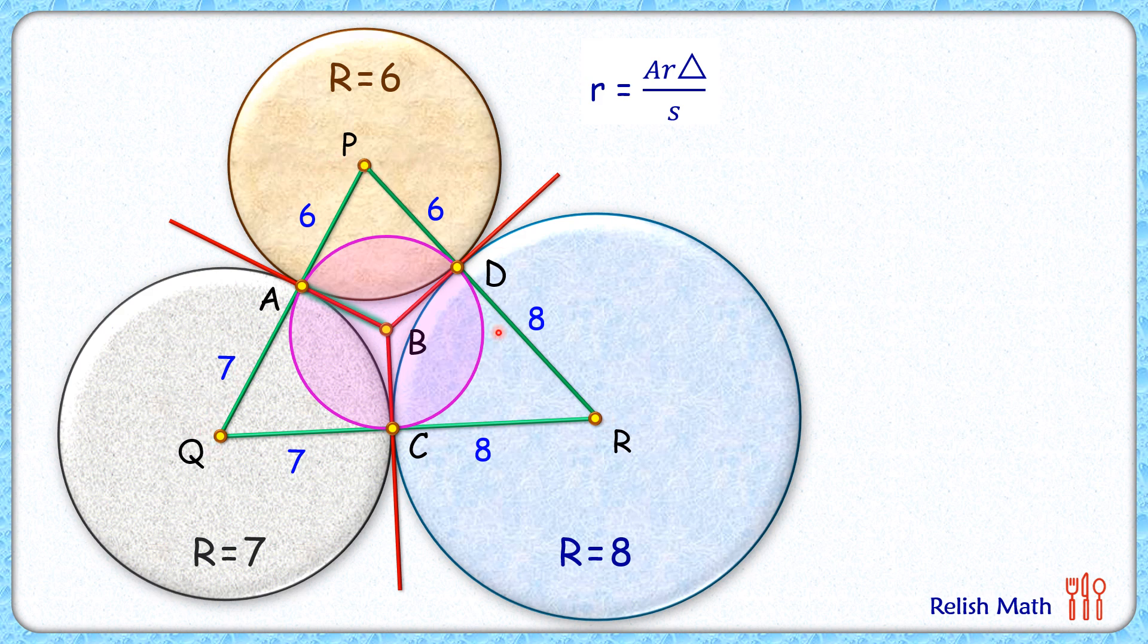So the semi-perimeter will be (13 + 14 + 15) / 2, or 21 cm. For the area of this triangle, we can use Heron's formula.